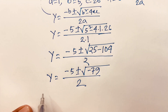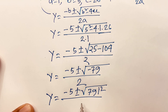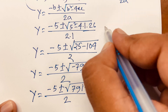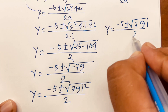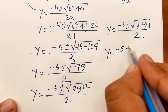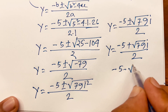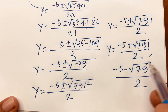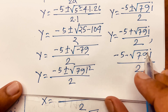So the values of y are (minus 5 plus √79 i) over 2 and (minus 5 minus √79 i) over 2. Both values are complex imaginary numbers. Since we need real numbers, both are rejected.